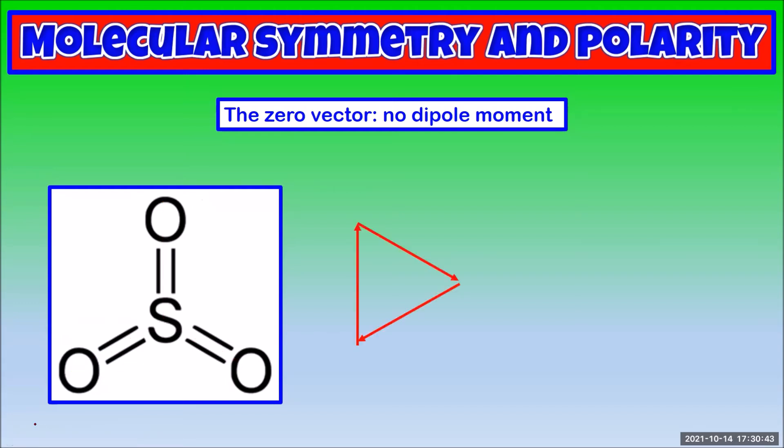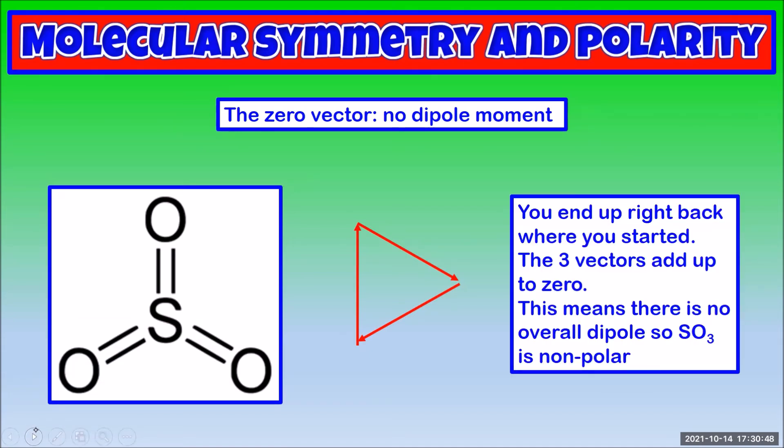We ended up right back at the start. The three vectors add up to zero. This means there's no overall dipole, so sulfur trioxide is nonpolar.